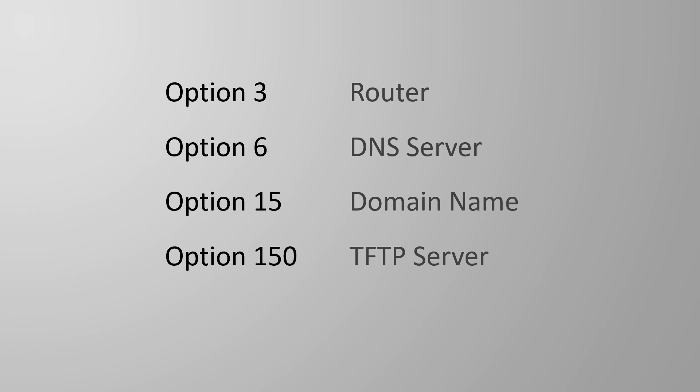The TFTP server option gives the client the IP address of a local TFTP server — a server that transfers small files. For example, we can back up our switch and router config files to a TFTP server. This is critical when you have phones on the network: when the phone starts up it gets an IP address and TFTP server address through DHCP, and that's where it downloads its config files from.